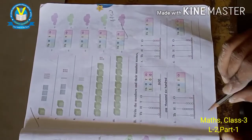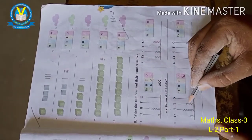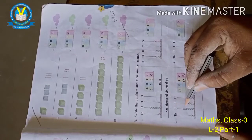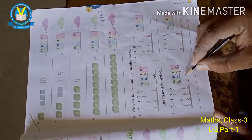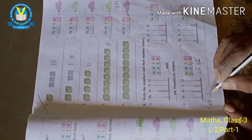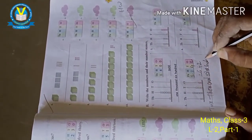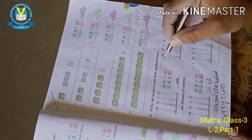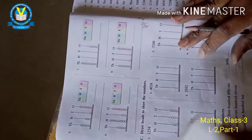The second abacus: ones place has 2 beads. Tens place has 4 beads. Hundreds place has 6 beads. Thousands place has 2 beads. So the number is 2,642.